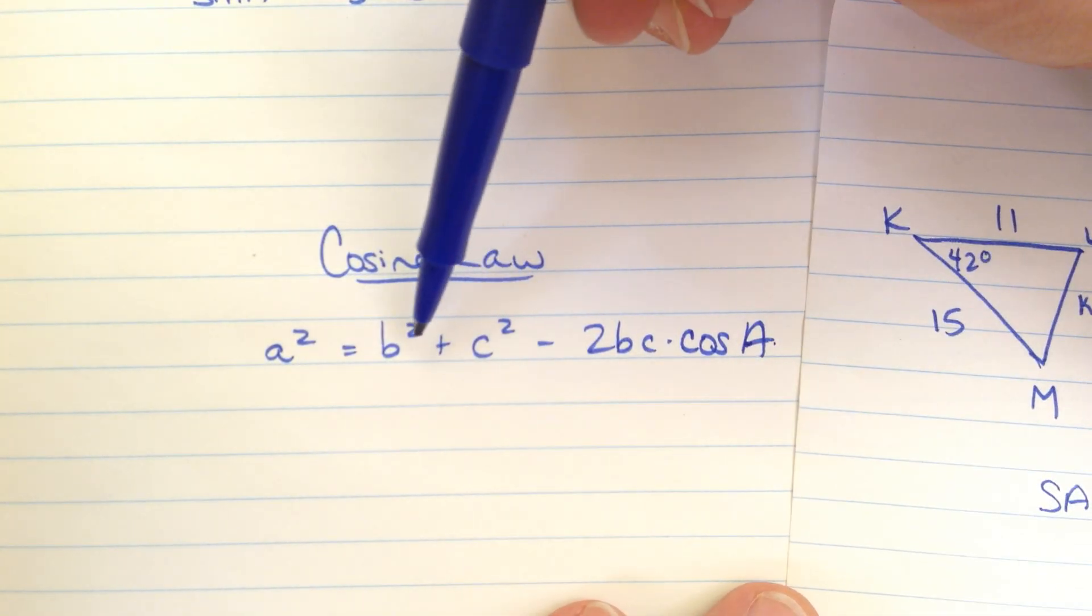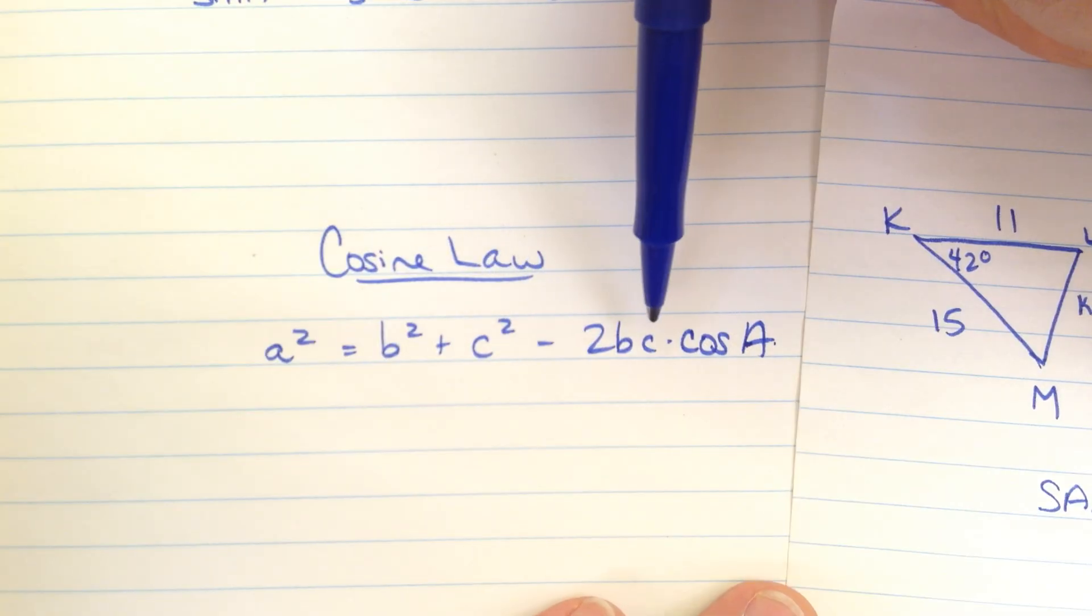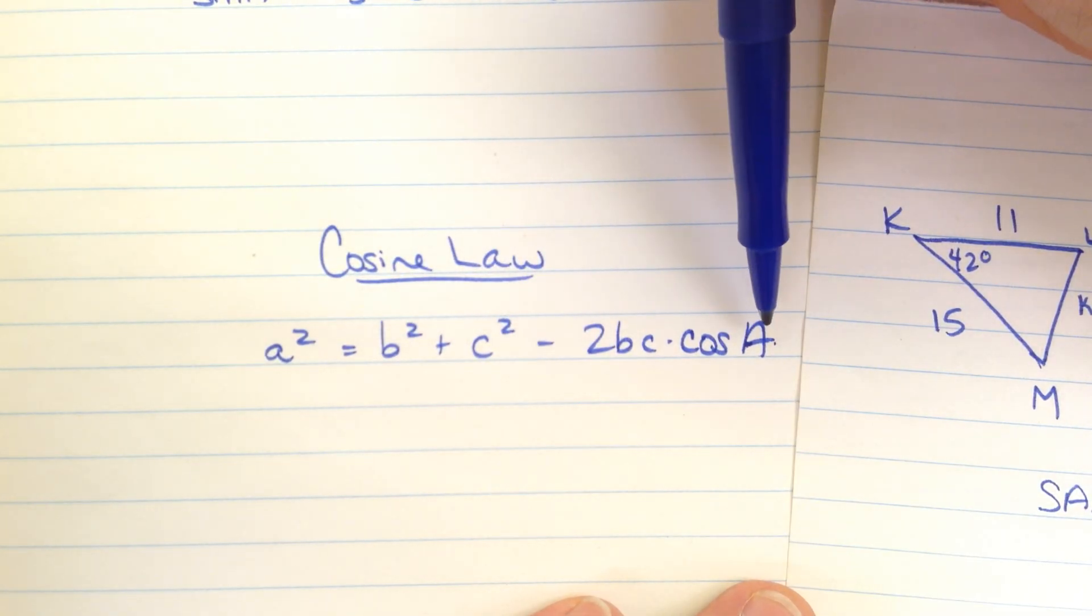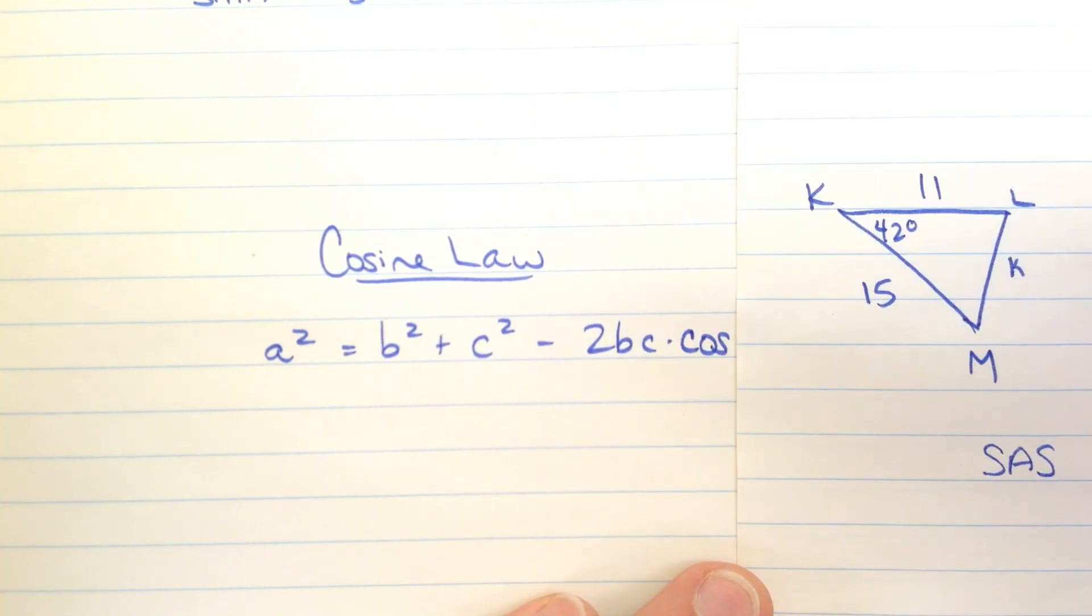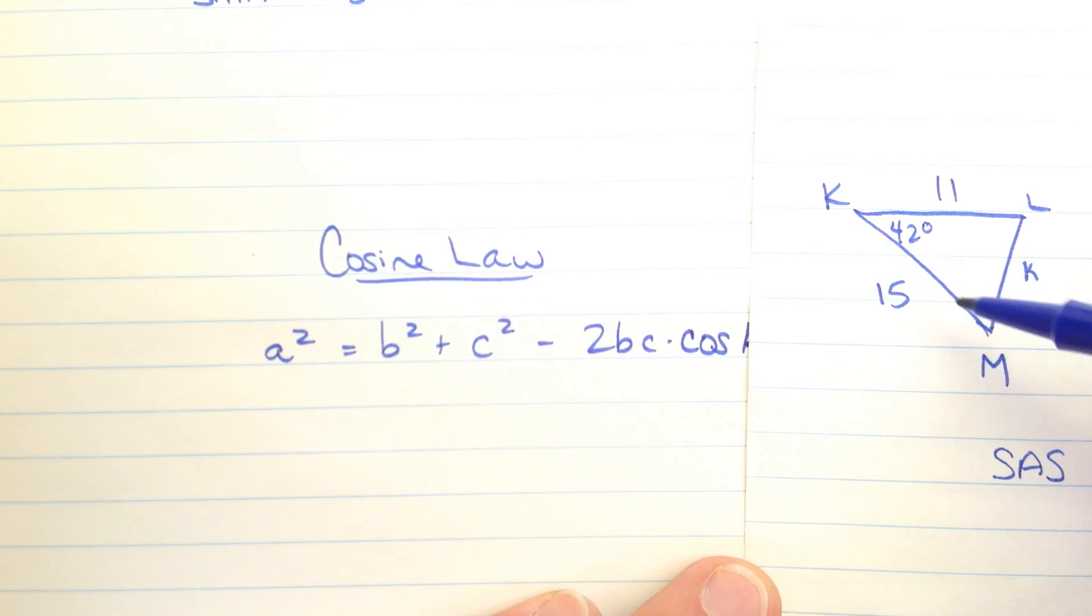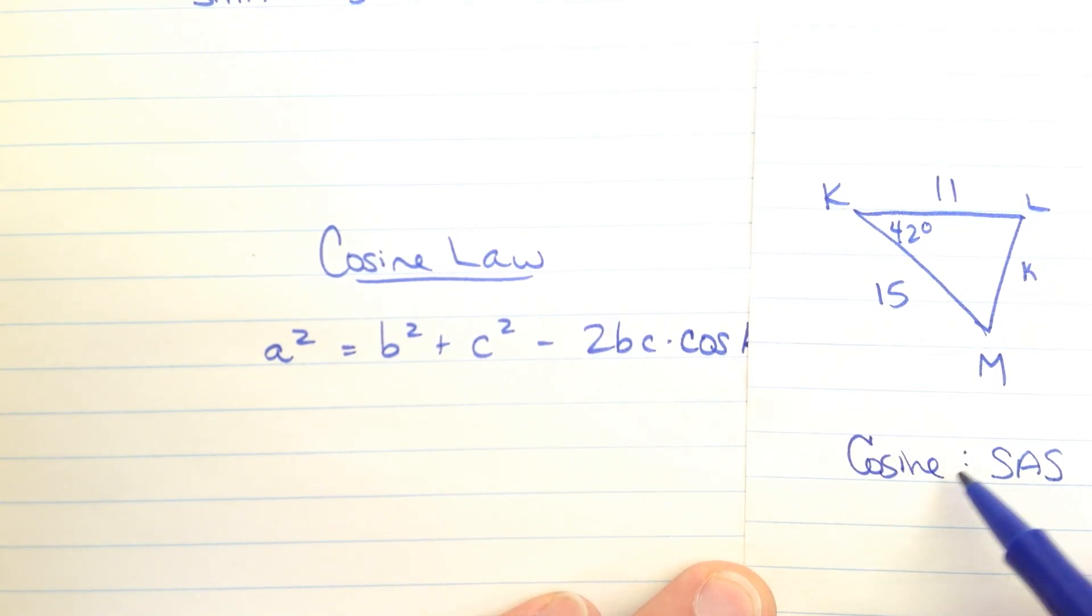Let's see. I could fill in two sides all through here and then the other angle that I know right here. So that's, this is the situation that we need. When I have two lengths and an angle between them, that's going to be a cosine law situation.